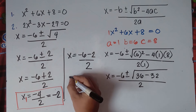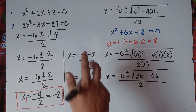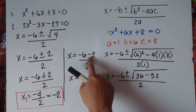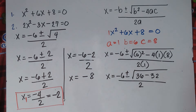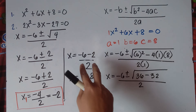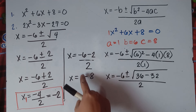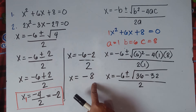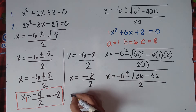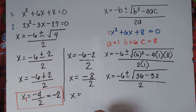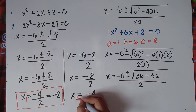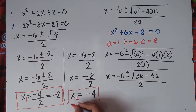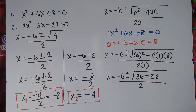For x₂: we have (−6−2)/2. When you have both negatives, simply copy the negative sign and add the numbers: 6+2 = 8, so we get −8. Then −8 divided by 2: dividing unlike signs gives a negative answer, so x₂ = −4. That is the answer for number 1 — x₁ = −2 and x₂ = −4.